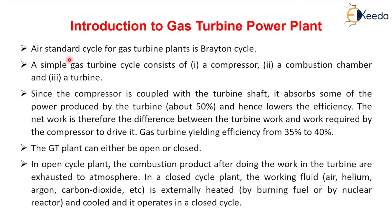The air standard cycle for Gas Turbine Power Plant is the Brayton cycle — you have to remember this. A simple Gas Turbine cycle consists of a compressor, combustion chamber, and a turbine. Since the compressor is coupled with the turbine shaft, it absorbs some of the power produced by the turbine — approximately 50%. The net work is therefore the difference between the turbine work and the work required by the compressor to drive it.